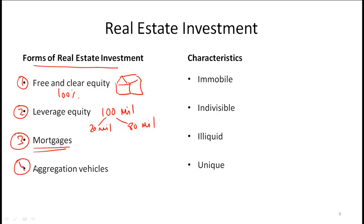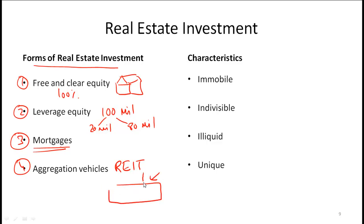And finally, we have aggregation vehicles. A classic example of an aggregation vehicle is a REIT, or a real estate investment trust. This is essentially like a mutual fund for real estate, where several investors pool their money together. Investors who want to put their money into real estate pool their money together, and from this large fund of money — let's say we collect 10 million — this fund is then used to make different sorts of real estate investments.